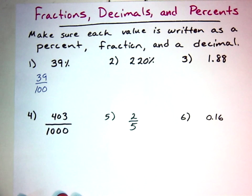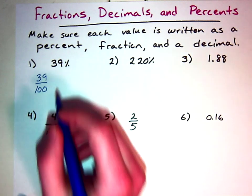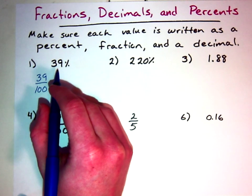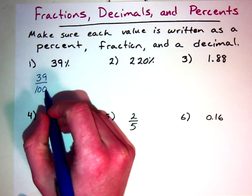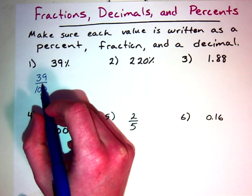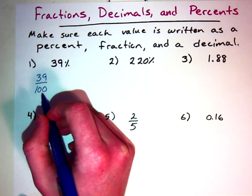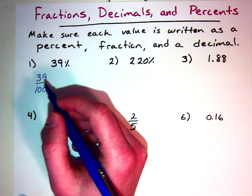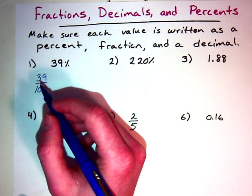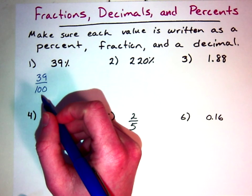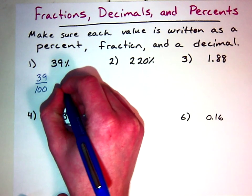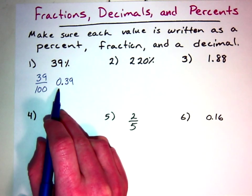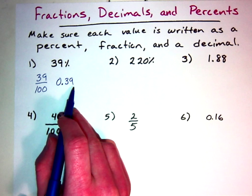We also need it in decimal form. To turn a percentage into a decimal, we just move the decimal two places to the left. Any number divided by ten moves the decimal one place to the left, so dividing by one hundred moves it twice to the left. So we get 0.39 as our decimal.